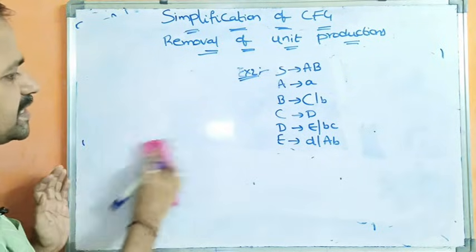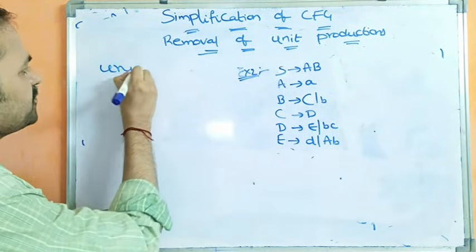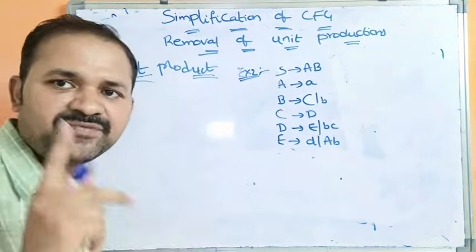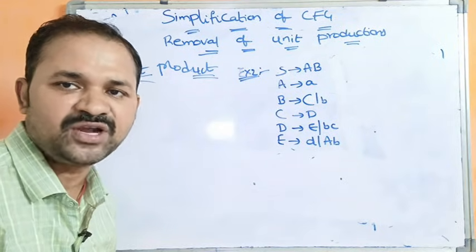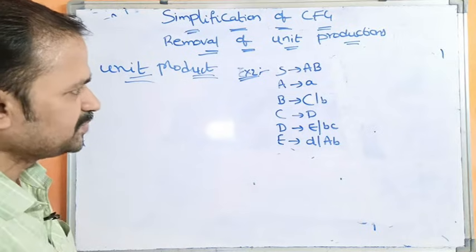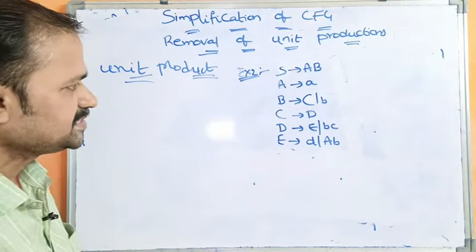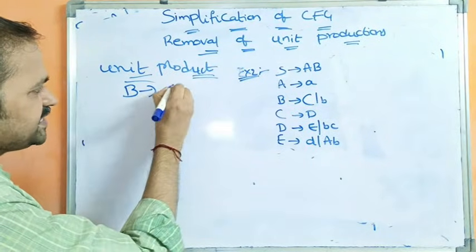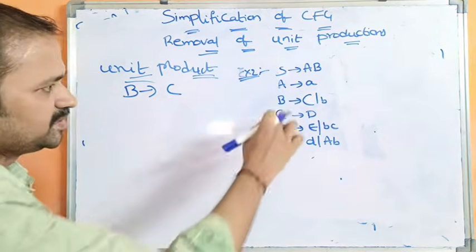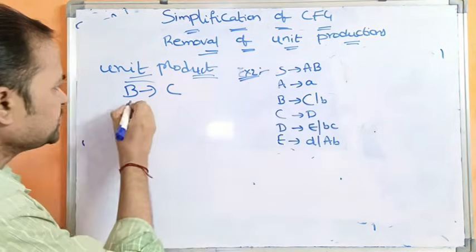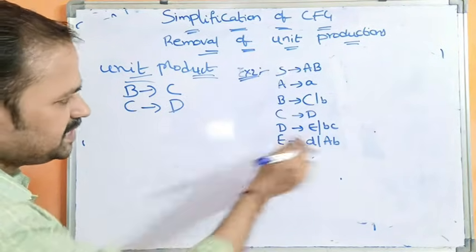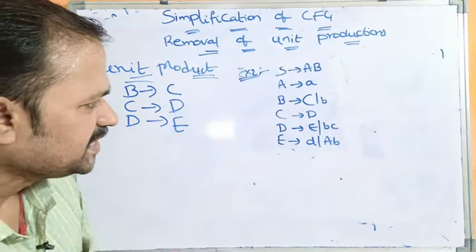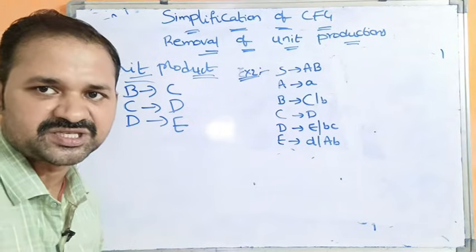First, we have to identify the unit productions. Unit production means the left-hand side contains only one non-terminal and the right-hand side contains only one non-terminal. S produces AB — not a unit production. A produces CA — not a unit production. B produces C — this is a unit production. C produces D — this is a unit production. D produces E — this is a unit production. E produces D — this is a unit production. D produces BC and E produces AB are not unit productions.